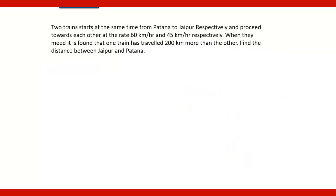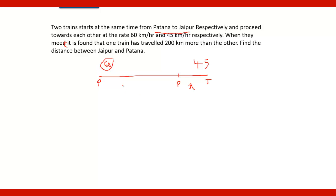Here is another question: two trains start at the same time from Patna to Jaipur and proceed towards each other, one with a speed of 60 km per hour and another with 45 km per hour. When they meet, one train has traveled 200 km more than the other. The one with more speed will cover more distance. If the shorter distance is x, the longer will be x plus 200. You have to find the total distance between Jaipur and Patna.